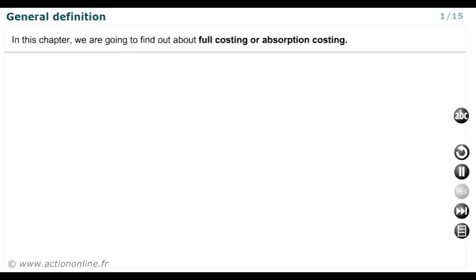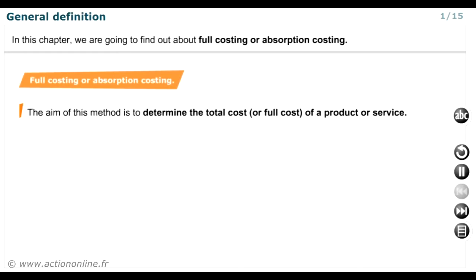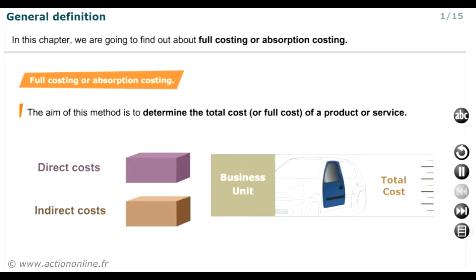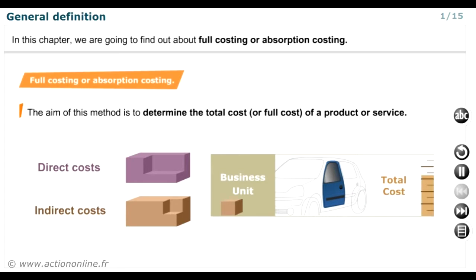In this chapter we're going to find out about full costing or absorption costing. The aim of this method is to work out the total cost or full cost of a product or service. To do this, we have to allocate all of its specific costs, its direct costs, together with a proportion of the costs shared by all the company's products — the indirect costs. In this method, we will therefore not distinguish the variable costs from the fixed costs, as required by direct costing.